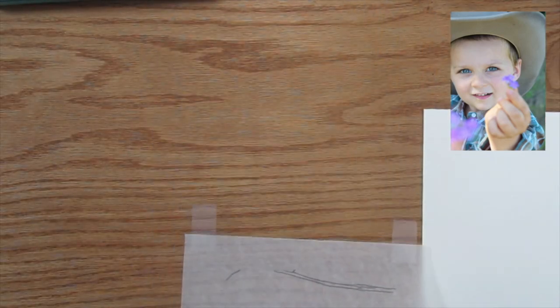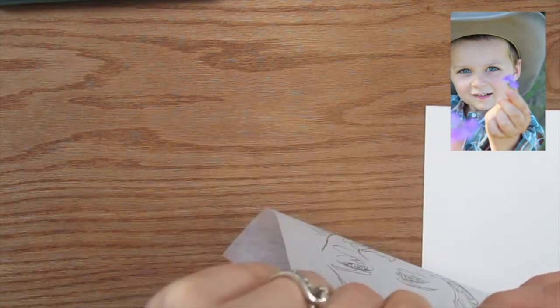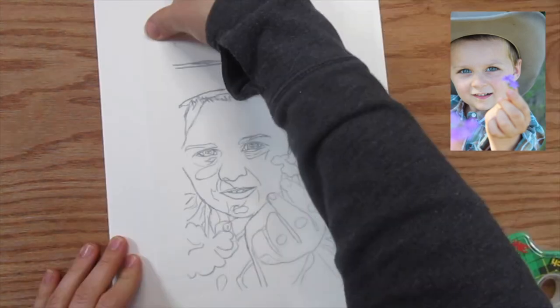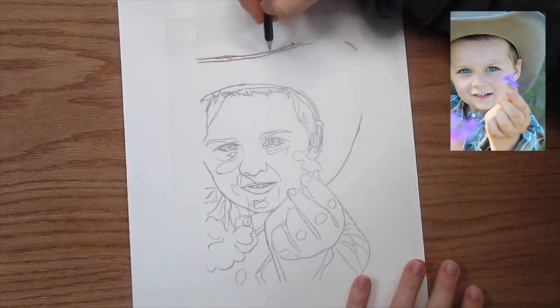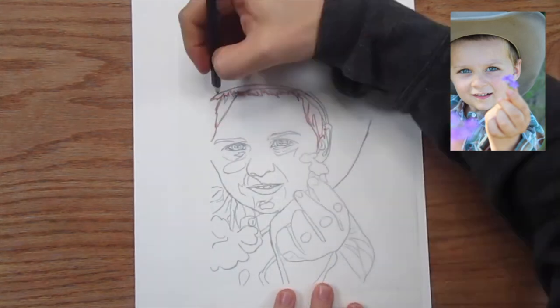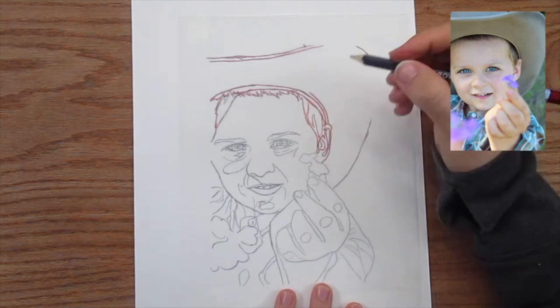We'll go ahead and flip our picture over onto the paper that we want our finished product on and tape it down to prevent sliding. Then we're going to use a red colored pencil to follow along all the lines that we previously made and push that graphite onto the paper.